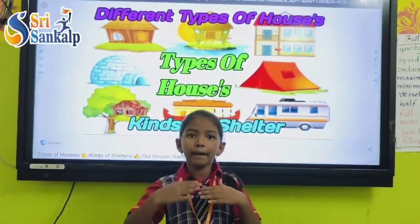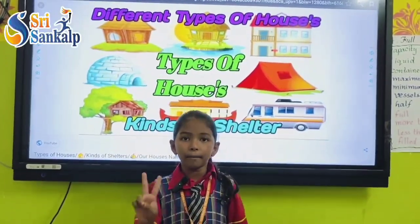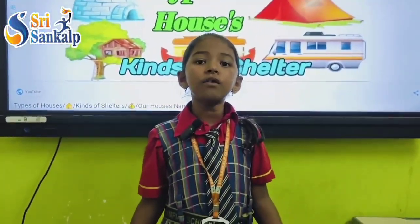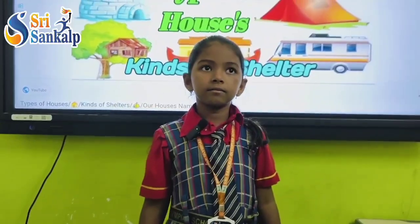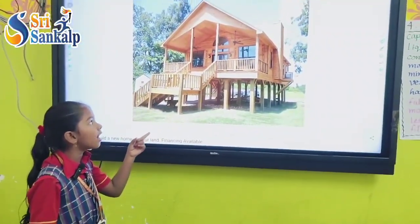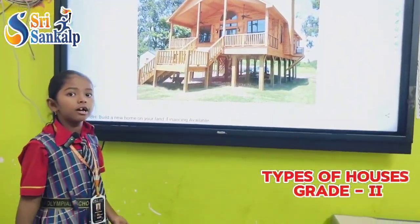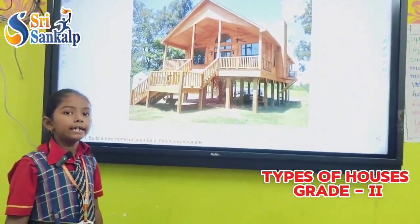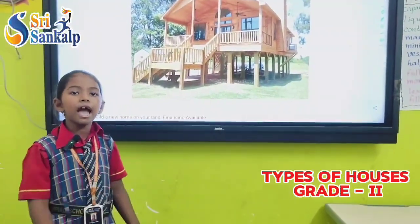Good morning everyone. My name is Masha. I am from grade 2. Today we learn different types of shelters. This is a shelter house. It is built above the ground in an area where it rains a lot. Thank you, have a great day.